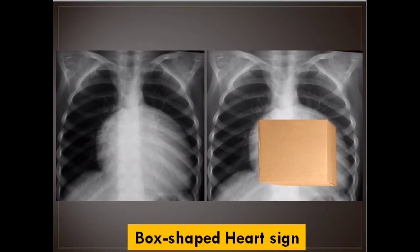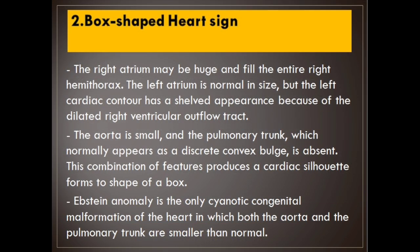Number 2: Box-shaped heart sign. The right atrium may be huge and fill the entire right hemithorax. The left atrium is normal in size, but the left cardiac contour has a shelved appearance because of the dilated right ventricular outflow tract. The aorta is small, and the pulmonary trunk, which normally appears as a discrete convex bulge, is absent. This combination of features produces a cardiac silhouette in the shape of a box.